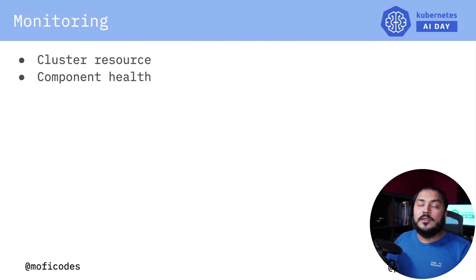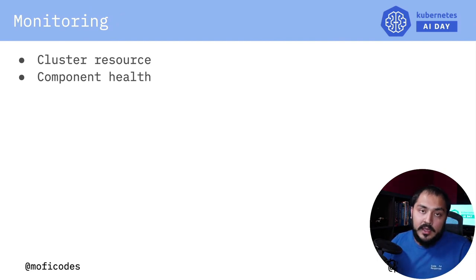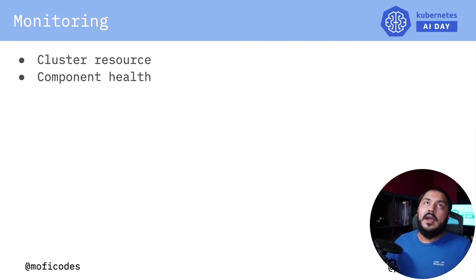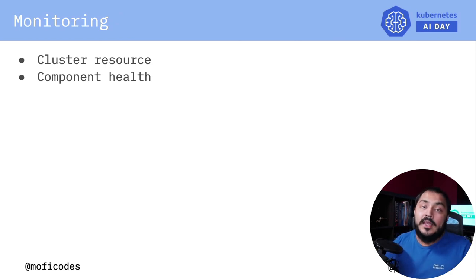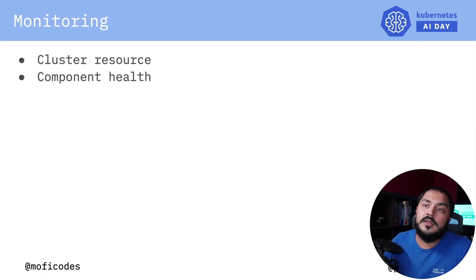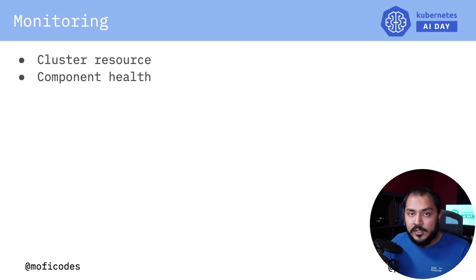Monitoring has a couple of aspects: figuring out how much resource you're using in your cluster and whether your components are healthy. Kubeflow doesn't have specific opinions on how you do this. Kubeflow uses Istio underneath, and Istio has a lot of monitoring capabilities through tools like Prometheus, Grafana, and Alert Manager. You can use all of those tools to get information from your cluster to know how much resource is being used and how your components are behaving.